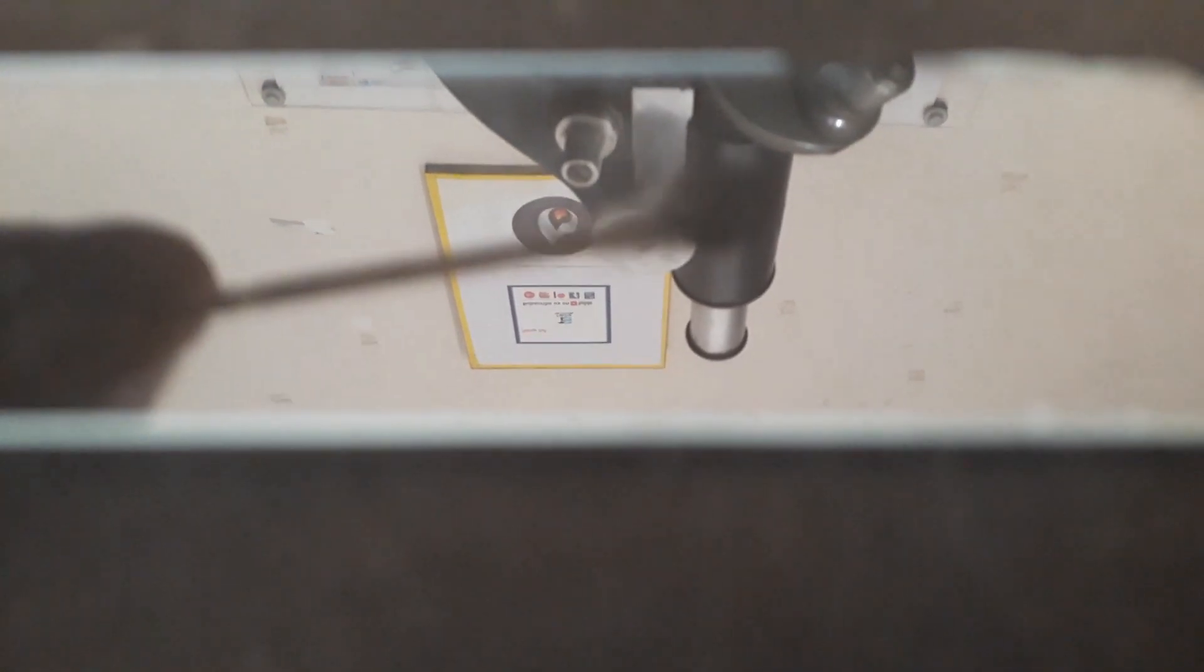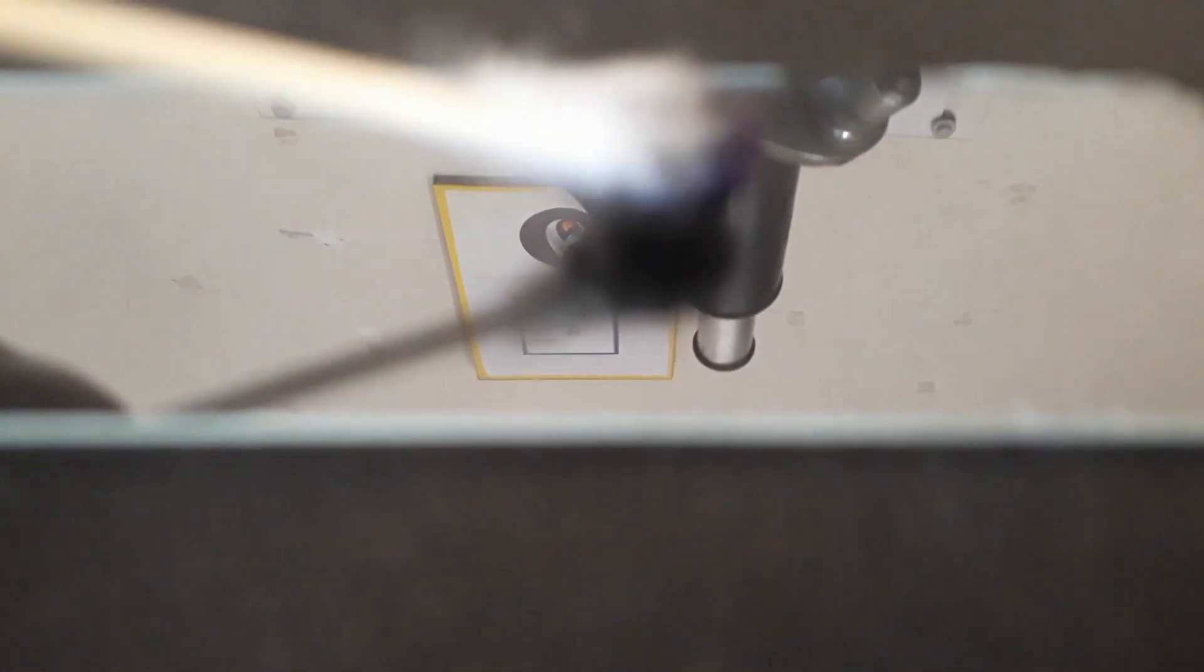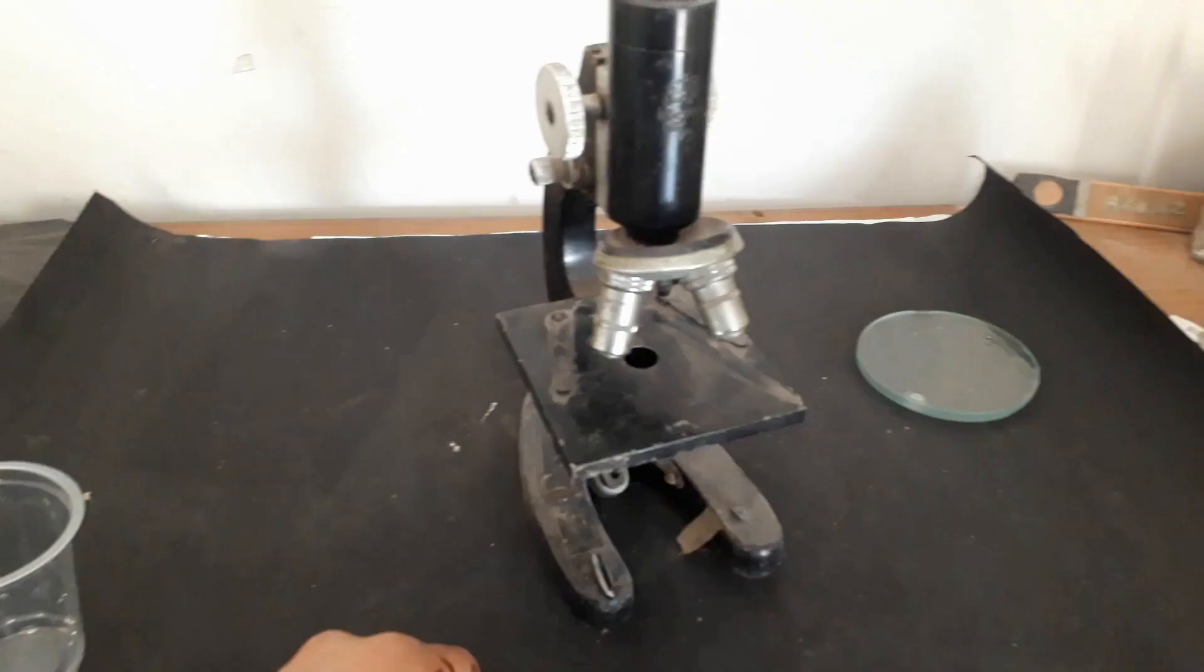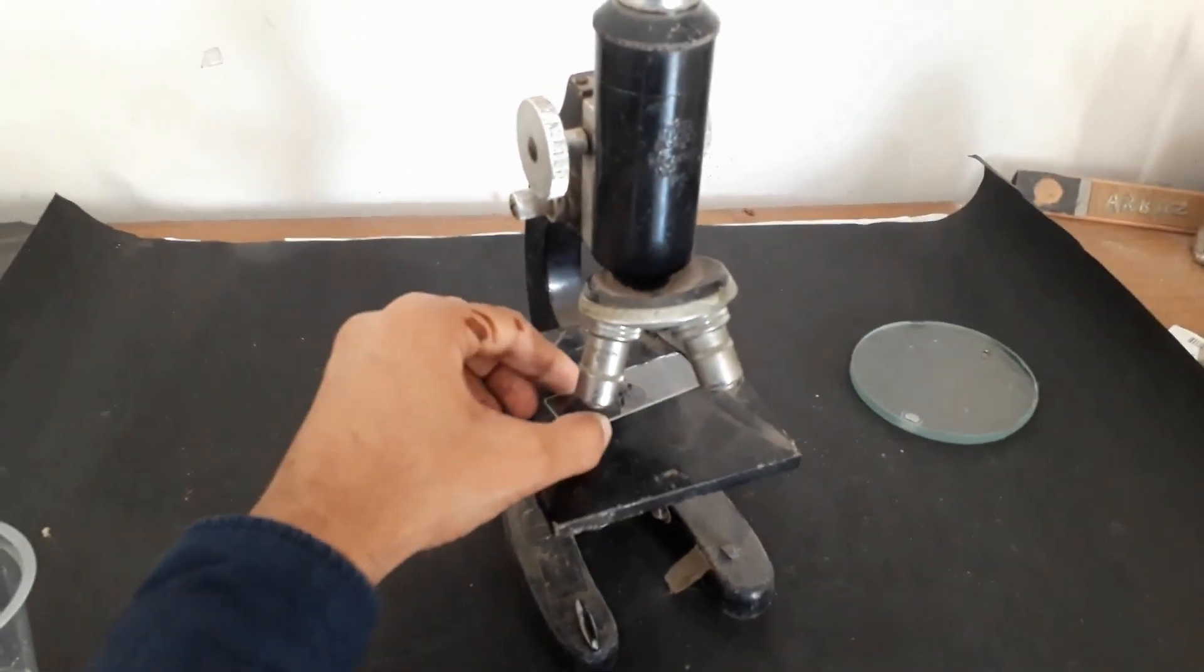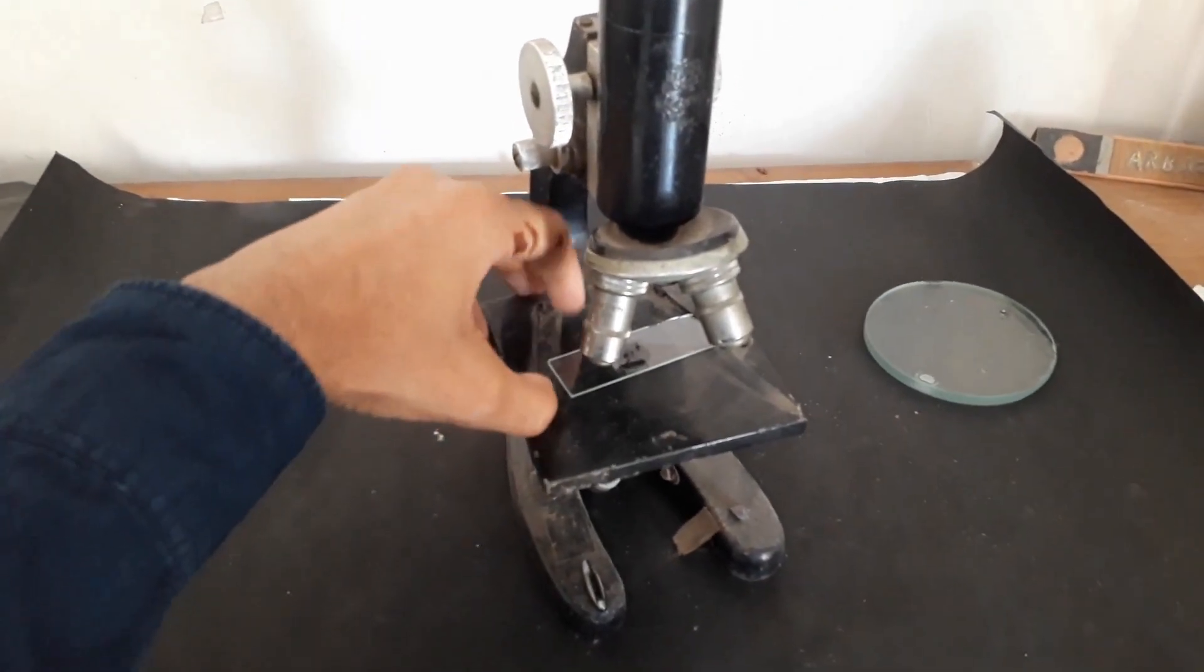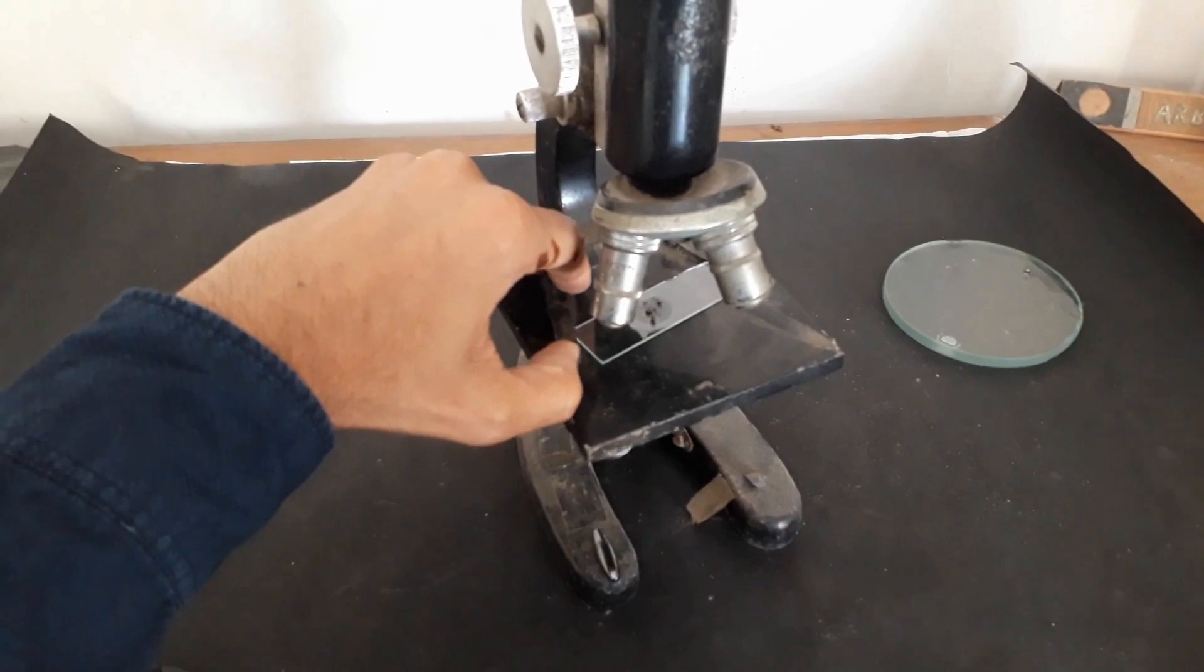Now we will put the potassium permanganate on the slide, and it needs to be refined so that we can observe the crystals clearly. Let's put the slide under the microscope and then we will observe.